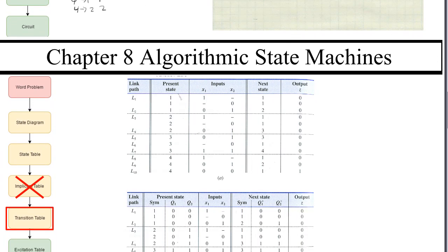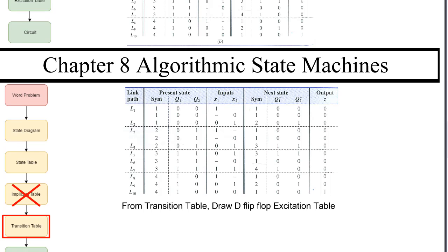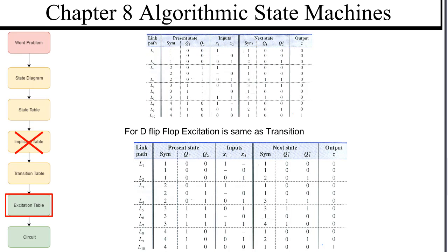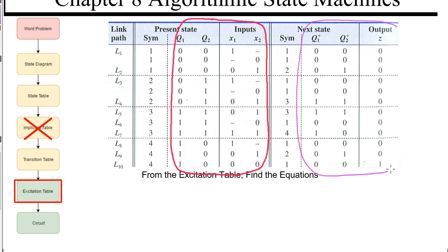We've got the transition table. The next step is the excitation table. Looks like we're just supposed to draw the D flip-flops, so that's the exact same thing. The next step is to find the equations. Z equals q1, q2_bar, x1_bar, x2_bar.